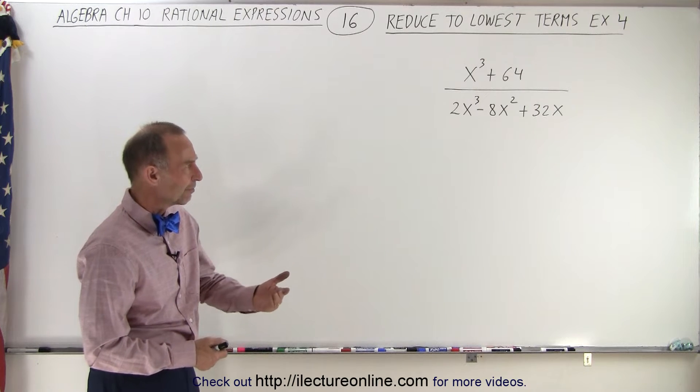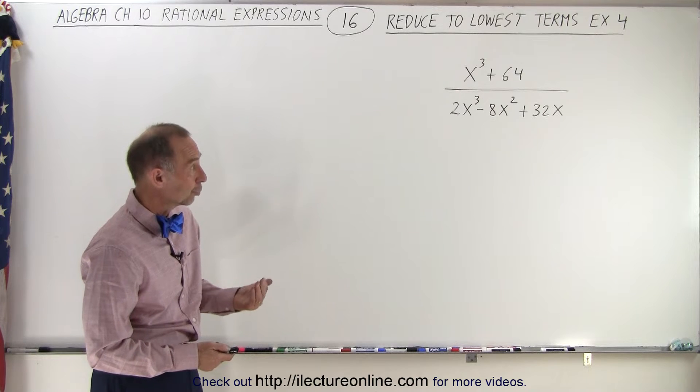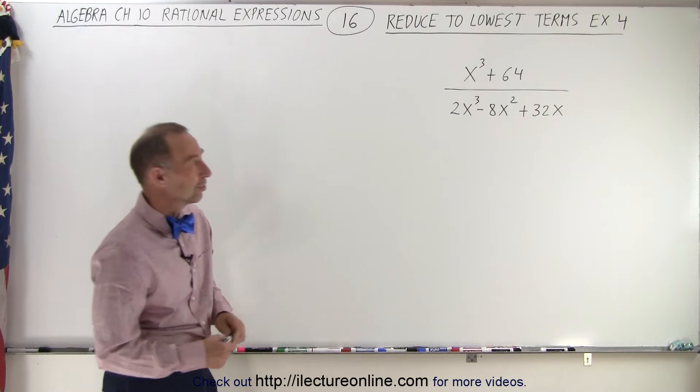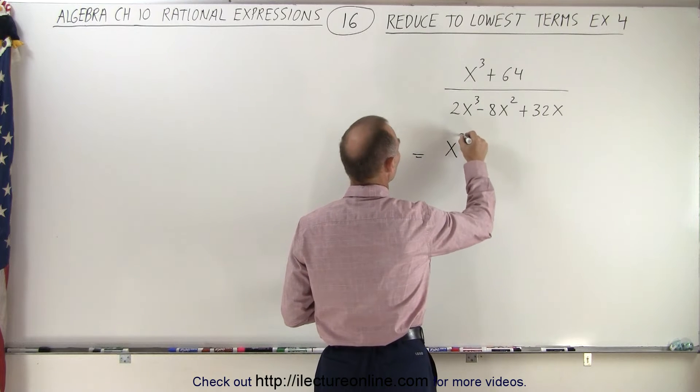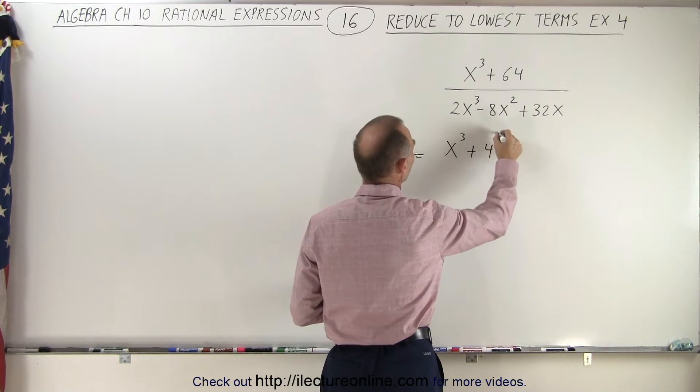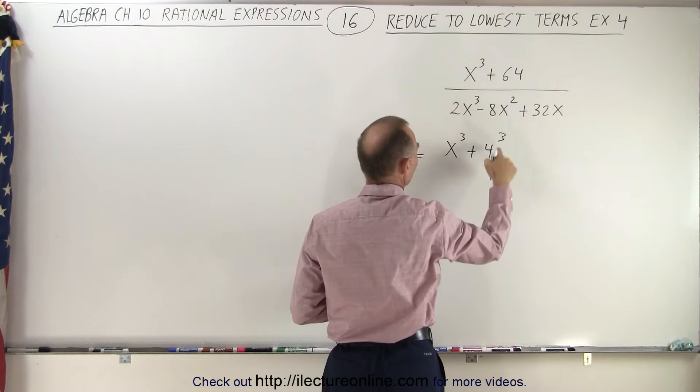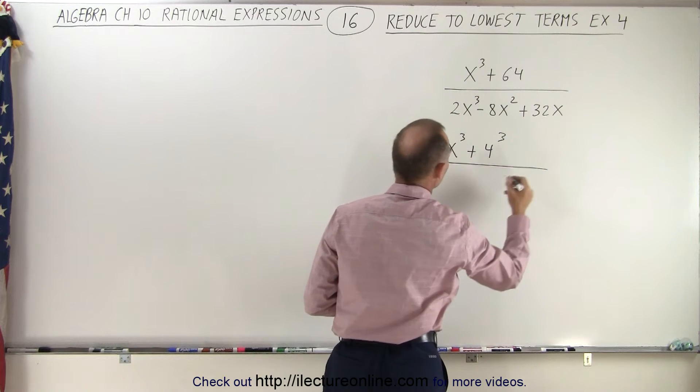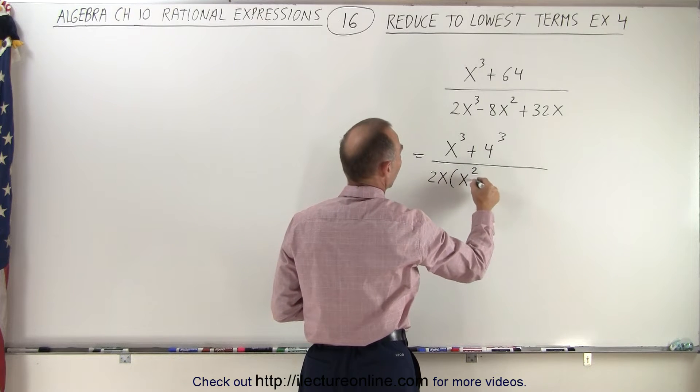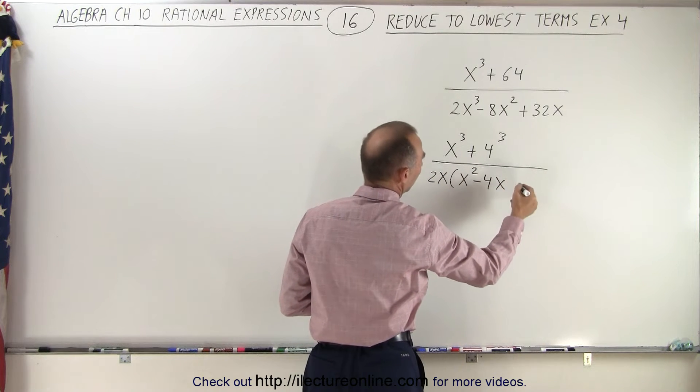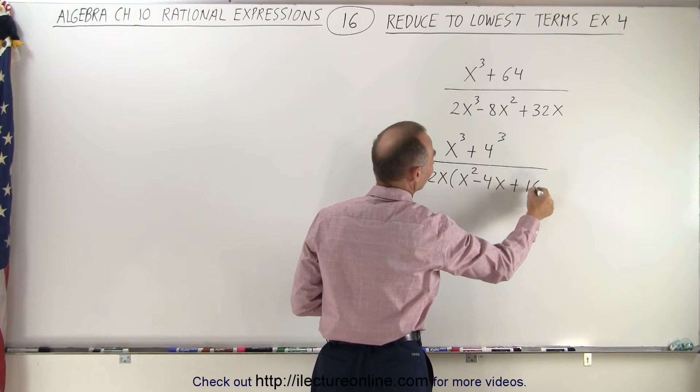In the denominator, we can factor out something common like 2 and x. Let's go ahead and try that. In the numerator, we write this as x cubed plus 4 cubed because 64 is the same as 4 cubed. In the denominator, we factor out 2x and are left with x squared minus 4x plus 16.